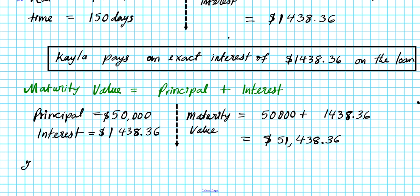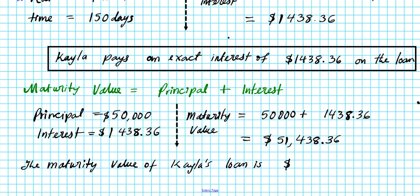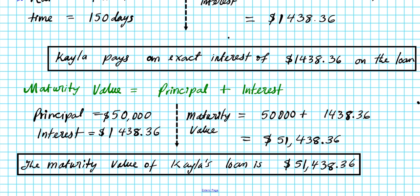The maturity value of Kayla's loan is $51,438.36. This is exactly how much Kayla should have ready to pay back at the end of the loan term. This is basically how to calculate the maturity value of a single payment loan.